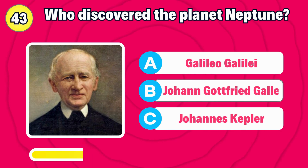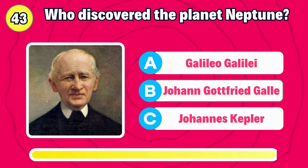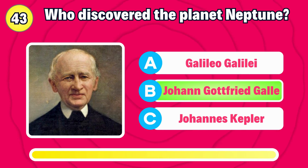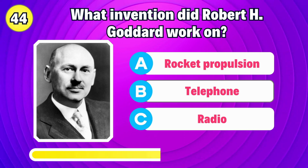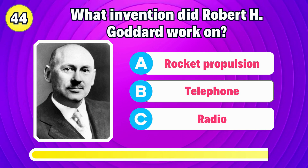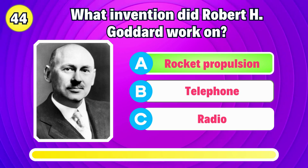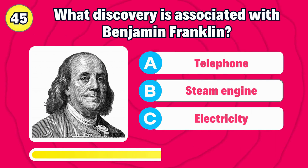Who discovered the planet Neptune? Right, it's Johann Gottfried Galle. What invention did Robert H. Goddard work on? Correct, it's rocket propulsion.